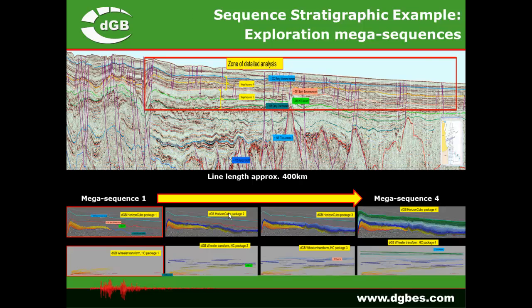This is an example of pure exploration — a huge 400-kilometer line offshore eastern Africa with no well data in the neighborhood. The HorizonCube was used to understand whether we could decompose the mega-sequences into individual components and identify where potential reservoir units may have been deposited.